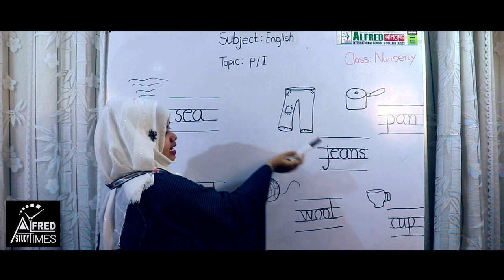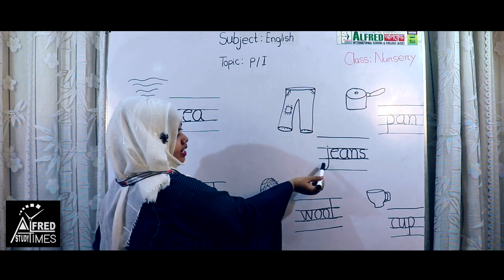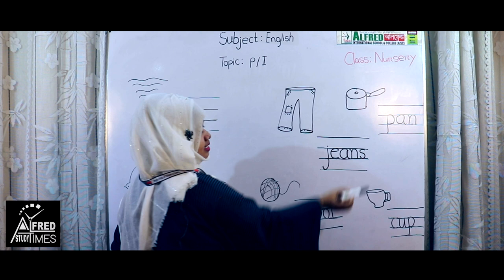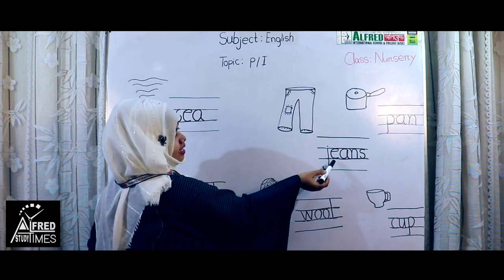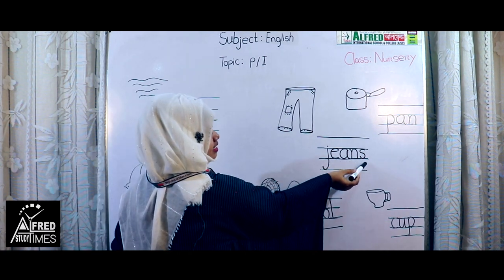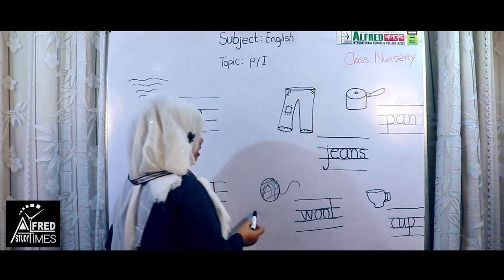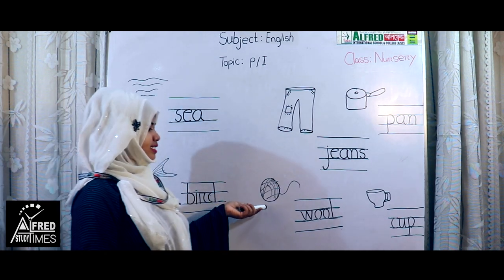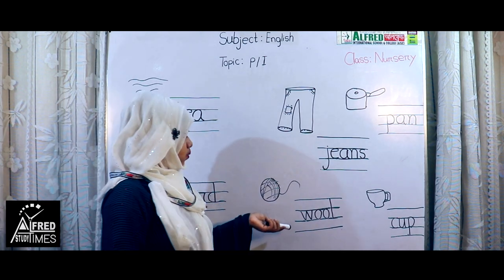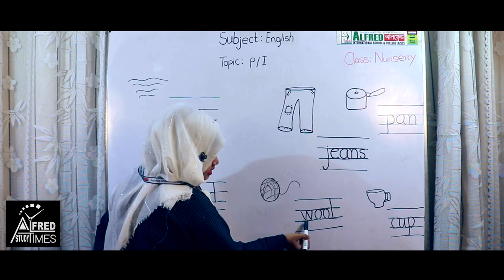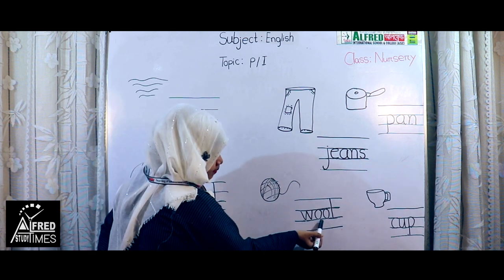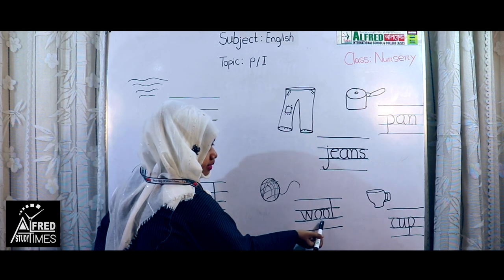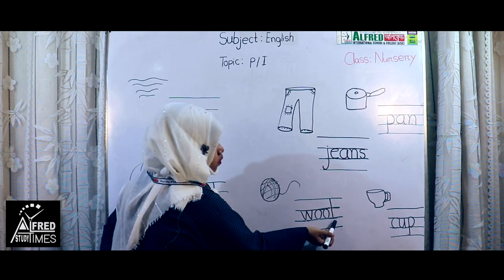Gins. Gins is spelling J-E-A-N-S. Gins. J-E-A-N-S. Gins. Next, ul. This picture name is ul. Ul is spelling W-O-L. Ul. W-O-L. Ul.